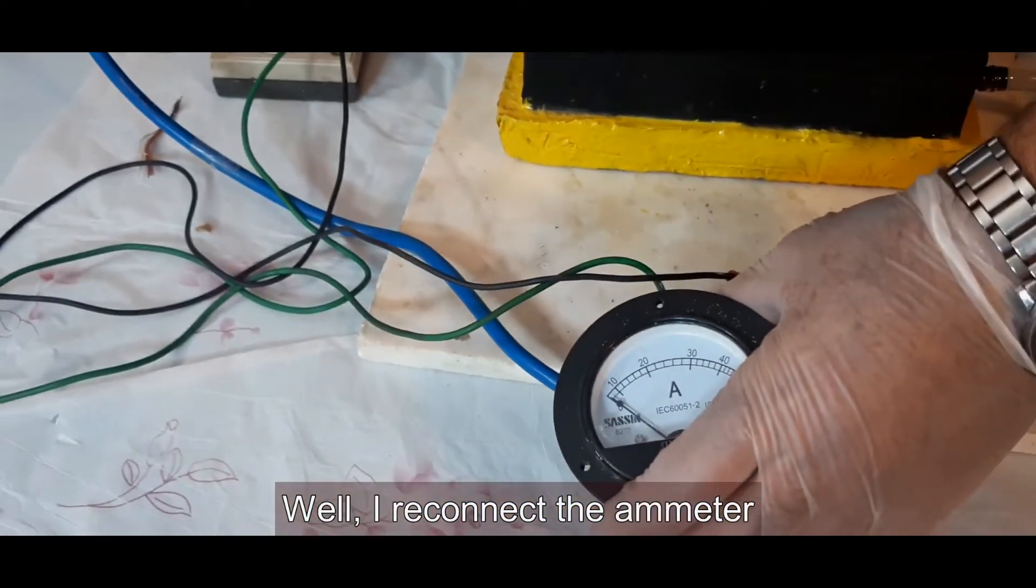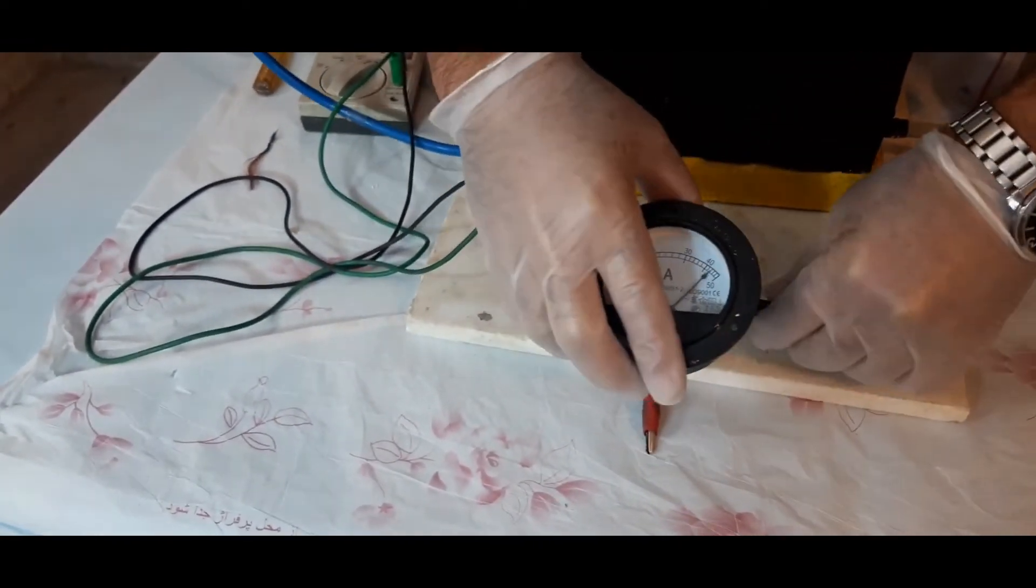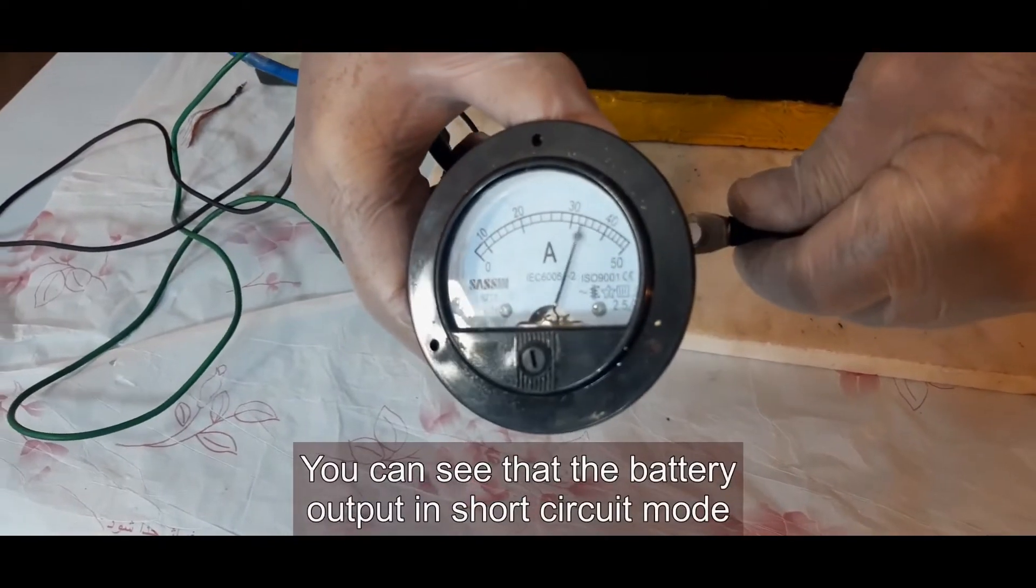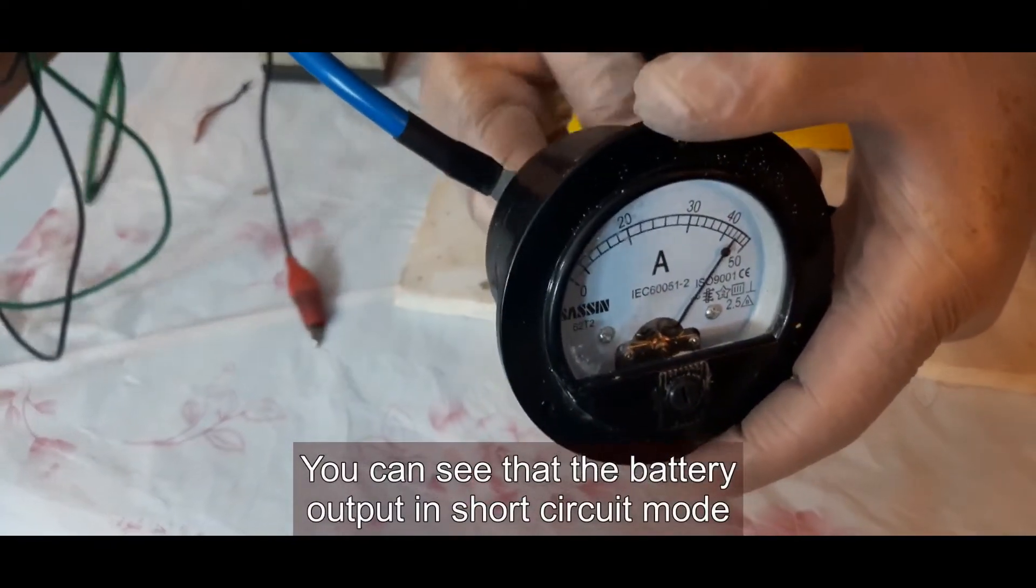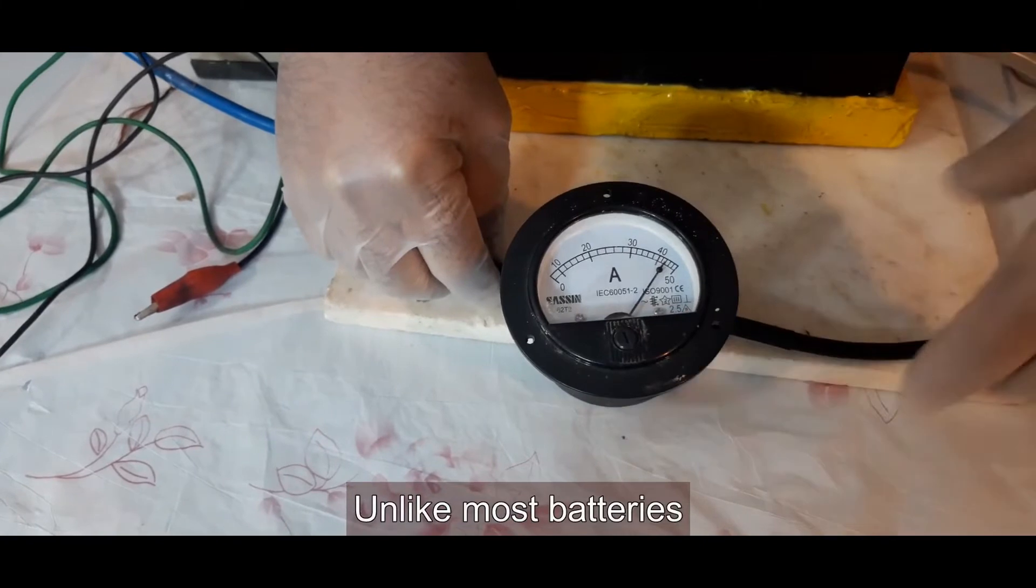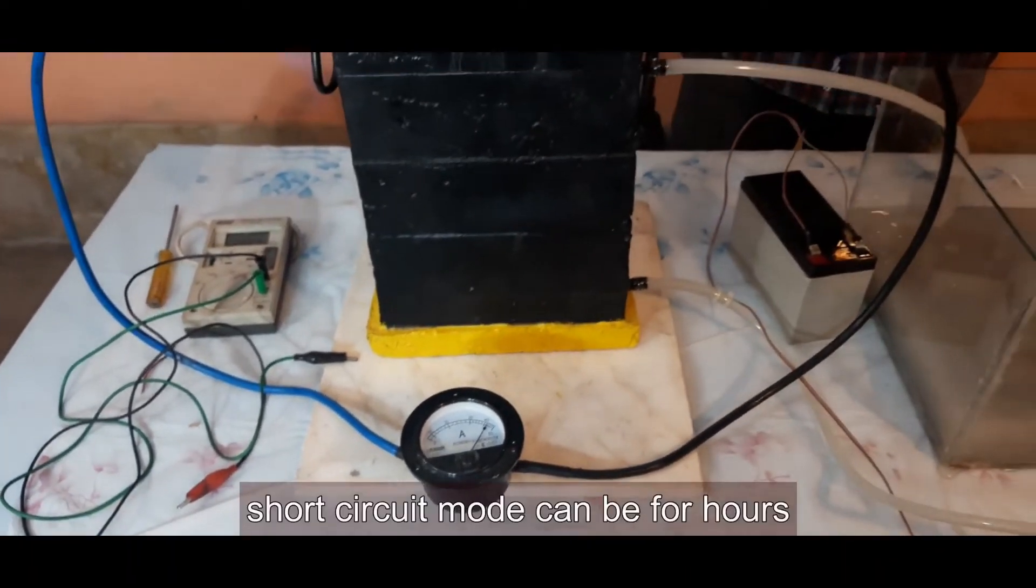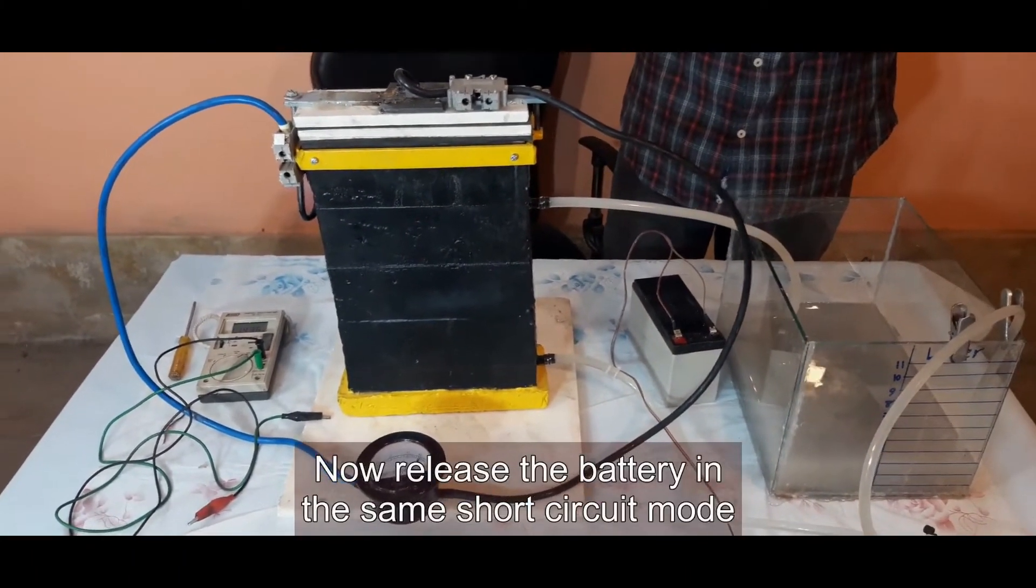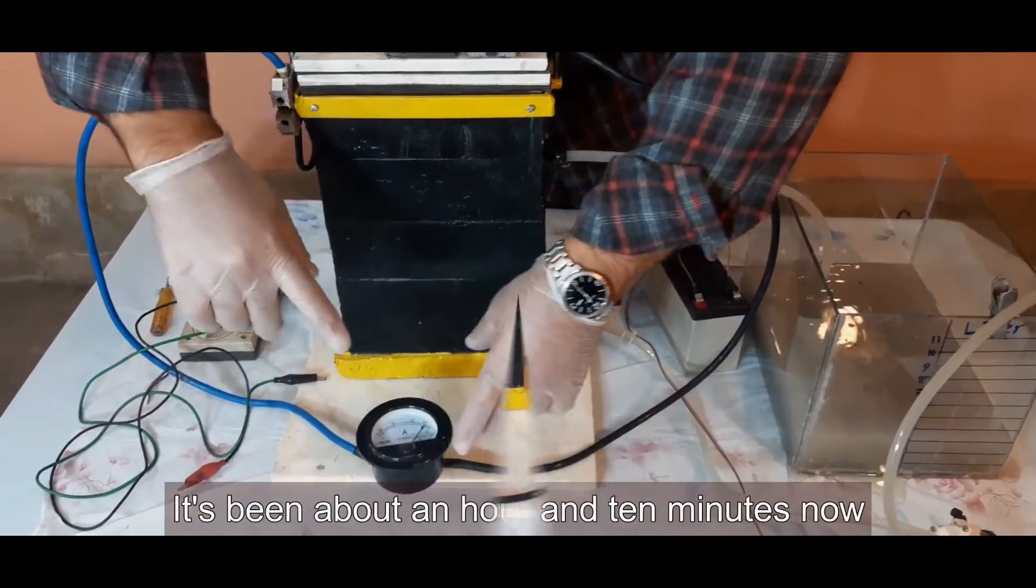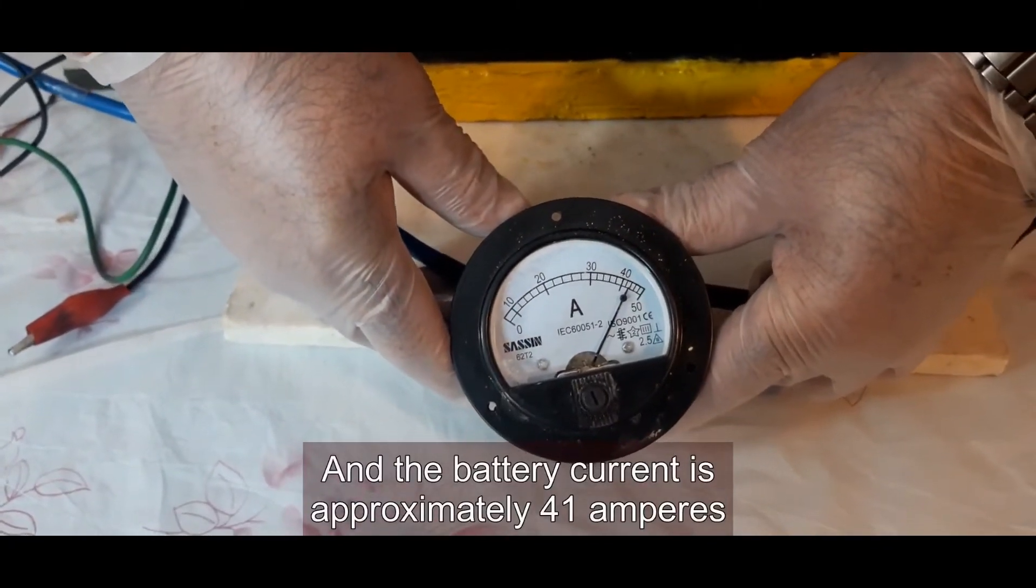I reconnect the ammeter. You can see that the battery output in short circuit mode is approximately 42 amperes. Unlike most batteries, this battery has no problem with short circuit. Short circuit mode can be for hours. Now release the battery in the same short circuit mode, and in another hour, we will check the battery. It's been about an hour and 10 minutes now, and the battery current is approximately 41 amperes.